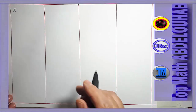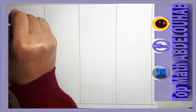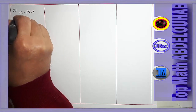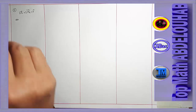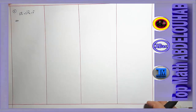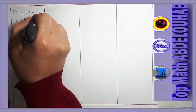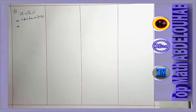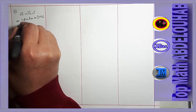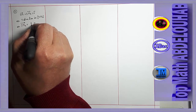On va passer à la troisième question. I est un point du plan tel que le vecteur IM1 plus IM2 égale vecteur nul. C'est une propriété connue. Calcul vectoriel : ceci est équivalent que I est le milieu du segment M1M2. Ce qui est équivalent que le vecteur IM2 est égal à un demi fois le vecteur M1M2. Il faut faire attention au sens des vecteurs.